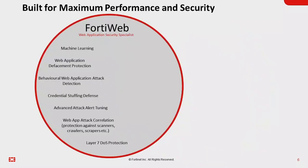For WAF signatures, both FortiADC and FortiWeb provide web application firewall capabilities. They offer a set of predefined WAF signatures or rules to help protect web applications against common vulnerabilities and attacks, also known as OWASP. Both solutions incorporate security services to enhance the protection of web applications. These services may include features like intrusion prevention, antivirus, IP reputation filtering, and more, depending on the specific offering and configuration.